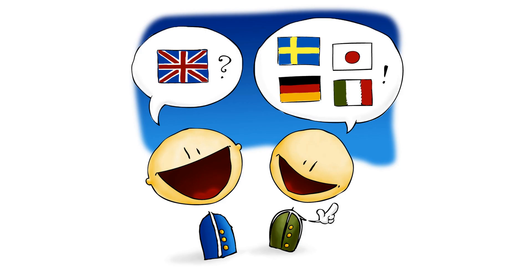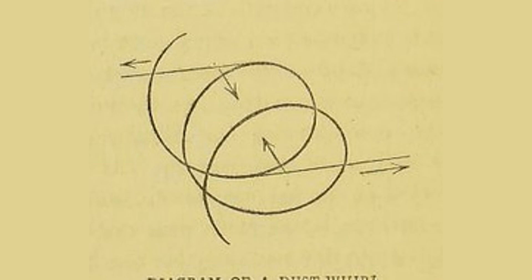Linguistics is the scientific study of language and it seeks to understand how language works, how it is acquired and how it is used. Mathematics, on the other hand, is the study of numbers, quantities and shapes and it provides a framework for understanding the world around us. The relationship between mathematics and linguistics is not immediately apparent but upon closer inspection, it becomes clear that the two fields are intimately connected.